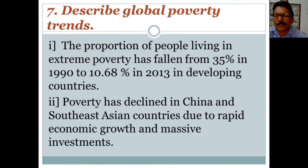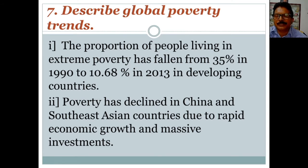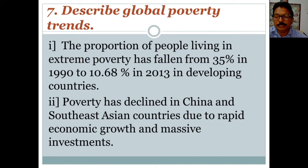The proportion of people living in extreme poverty has fallen from 35% in 1990 to 10.68% in 2013 in developing countries. So over a period of 23 years, the poverty level in developing countries has fallen significantly.